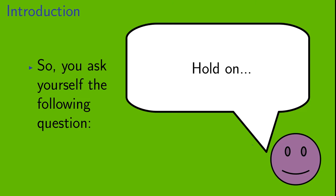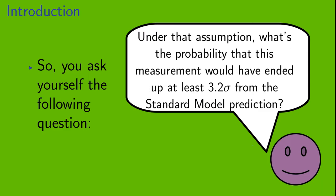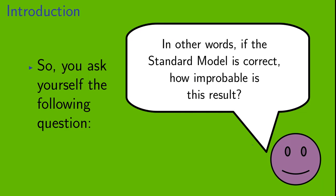So, you ask yourself the following question. For the sake of argument, let's assume for the moment that this particle doesn't exist, and the standard model prediction is correct. Under that assumption, what's the probability that this measurement would have ended up at least 3.2 sigma from the standard model prediction? In other words, if the standard model is correct, how improbable is this result?